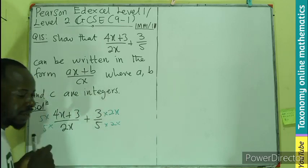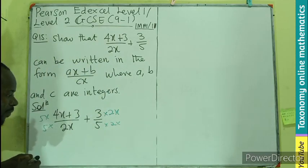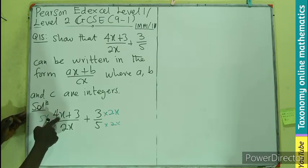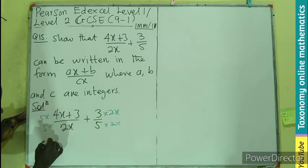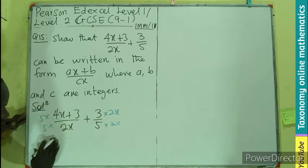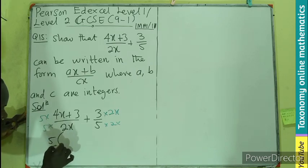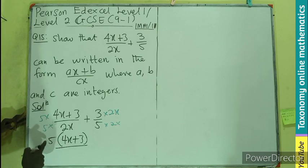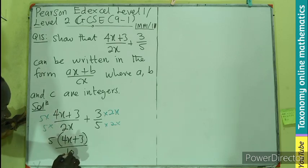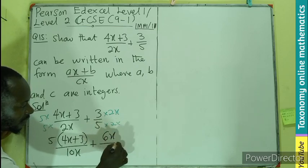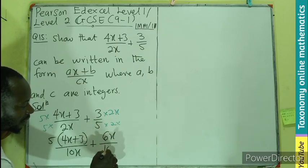So we can easily add the numerators. 5 is multiplying this, so 5 into bracket, 4x plus 3, divided by 5 times 2x which is 10x, plus 3 times 2x which is 6x, divided by 10x.